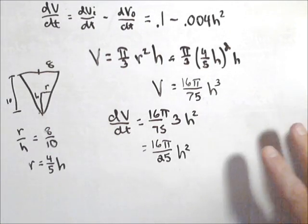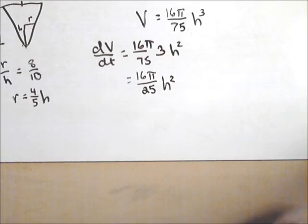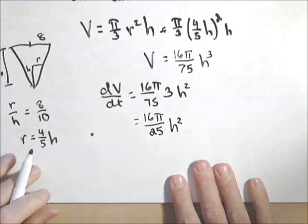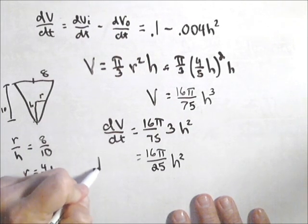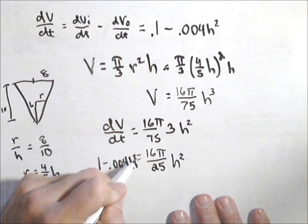All right, now I'm going to need a little bit more room here. So I'm going to now plug in my dV/dt right here, which was, if you remember from before, I have it still up here, the 0.1 minus 0.004h².